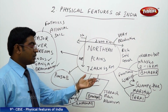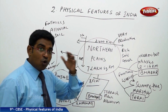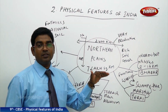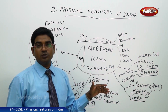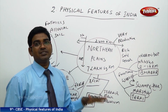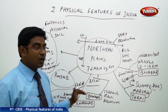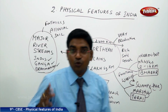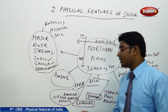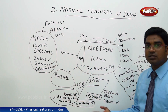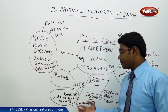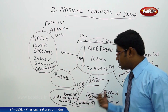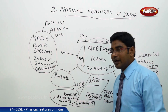Later we have the terrace — older alluvium, which sits above the flood plains, with no possibility of getting floods here much. So this is called Bangar. We also have the new alluvium getting deposited here, known as Kankar, and this is also a very fertile land, known as Khadar.